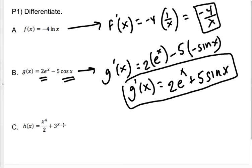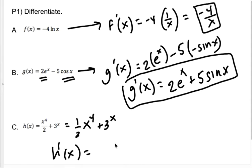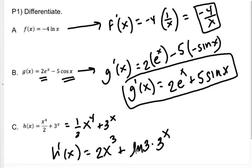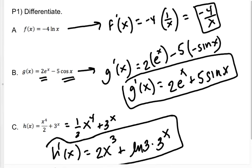For my last one, I would suggest that you rewrite this as a 1 half in front. My h prime is going to be — I drop the 4 down in front and get 4 halves, which is 2x to the third. Then I have to use the a to the x rule, because that 3 is the base, not the exponent. So I'm going to get natural log of 3 times 3 to the x.